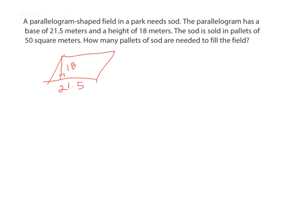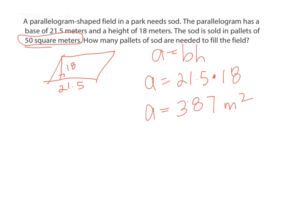This is the same exact problem as the last one. We got to find out the area of the field. Then we have to find out the area of, well, it tells me the area of the pallets. So then we just find out how many pallets we need. So for a parallelogram, area equals base times height. So my base is 21.5, and I'm going to multiply that times the height, which is 18. And that's going to tell me my area. So I go ahead and multiply 21.5 times 18, and my area of the parallelogram, the field, is 387 meters squared. And one pallet is 50 square meters. So I need to find out how many pallets it will take to cover that field.